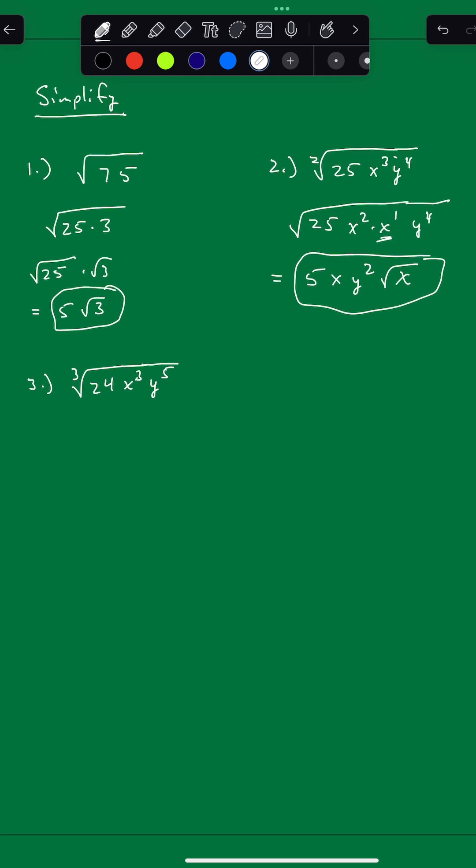Now let's look at this one. We've got the cube root. Same thing, we're just looking for perfect cubes instead of perfect squares. Does 24 have a perfect cube? Of course it does. 8 times 3, 8's a perfect cube. Now x cubed, 3 divides into 3 evenly, so we'll leave that for now.